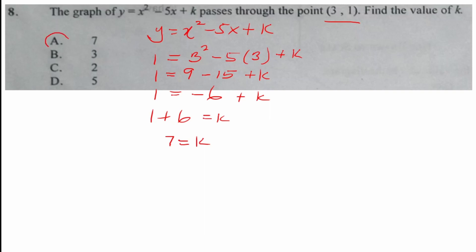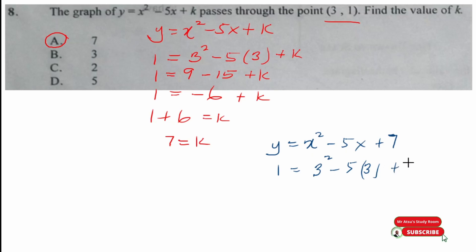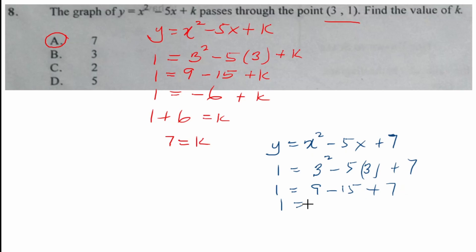When we look at the options, that is option A. It means that if we now have the equation y equals x squared minus 5x plus 7, because k is 7, the coordinate of this point will satisfy this equation. When you put 3 for x and 1 for y: 1 equals 9 minus 15 plus 7, which gives 1 equals 1. Because the left equals the right, we confirm that 7 is correct for k.